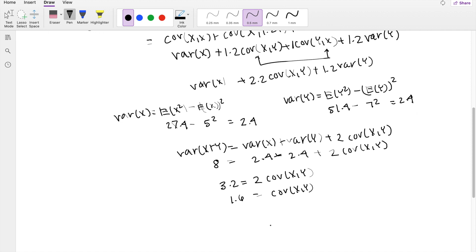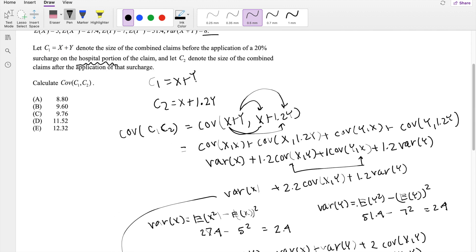So then we have everything we need. Taking this formula here, variance of X is 2.4 plus 2.2 times the covariance of the two variables, that's 1.6, plus 1.2 times variance of Y. Variance of Y here is going to be 2.4 as well. So then this is equal to 8.8, which is our answer A.